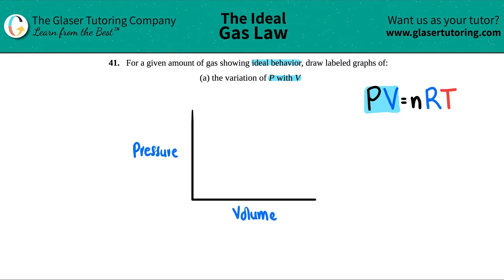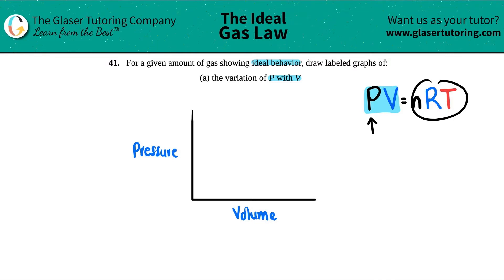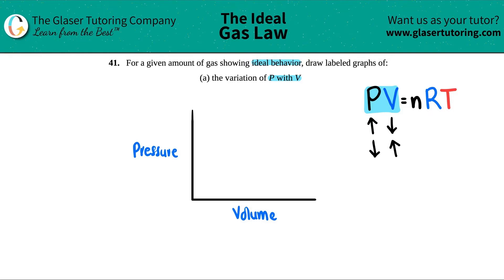So that means if pressure and volume multiplied by each other equals some value, if pressure increases, the volume has to come down, and vice versa — if the pressure decreases, the volume has to come up to compensate so that it still equals the same value. This tells us that pressure and volume are indirectly related.